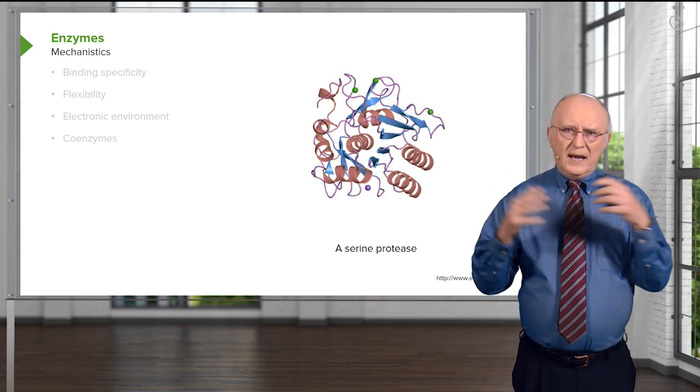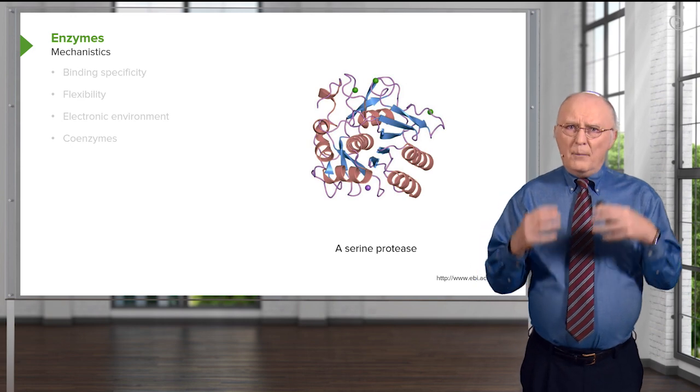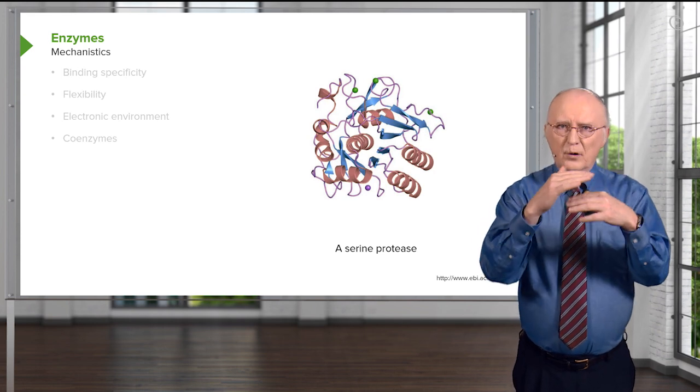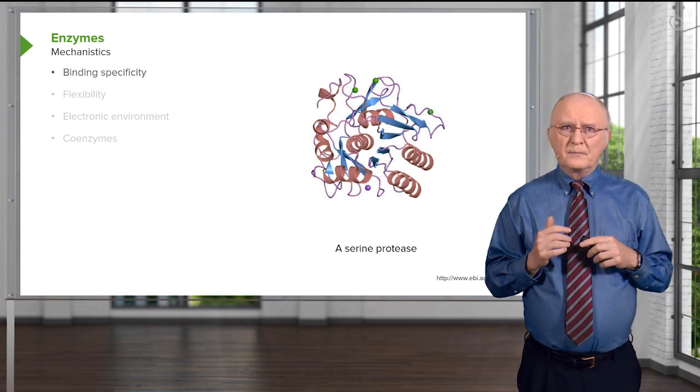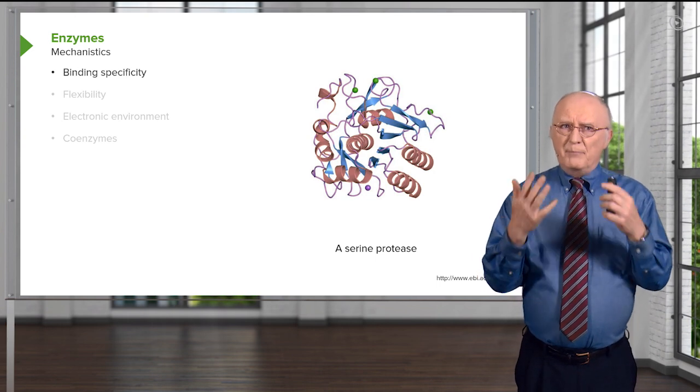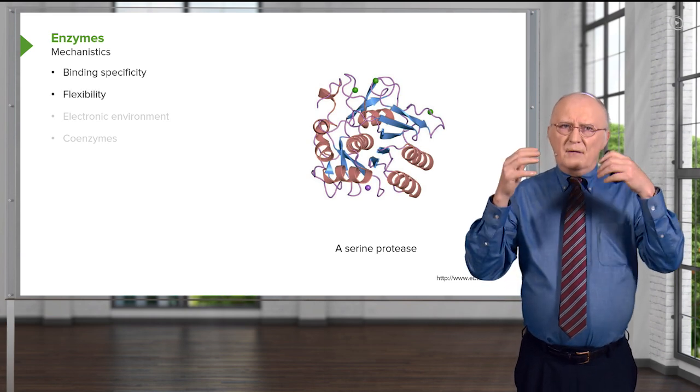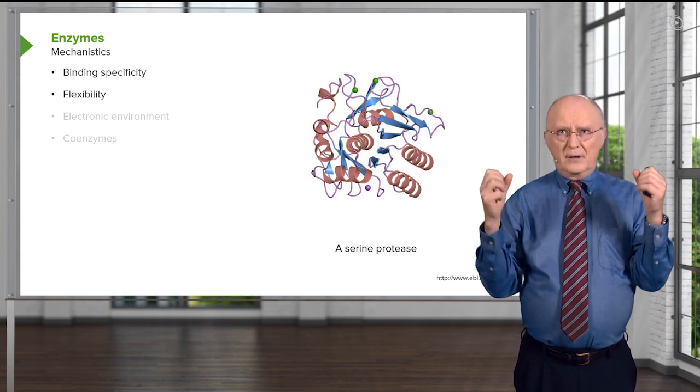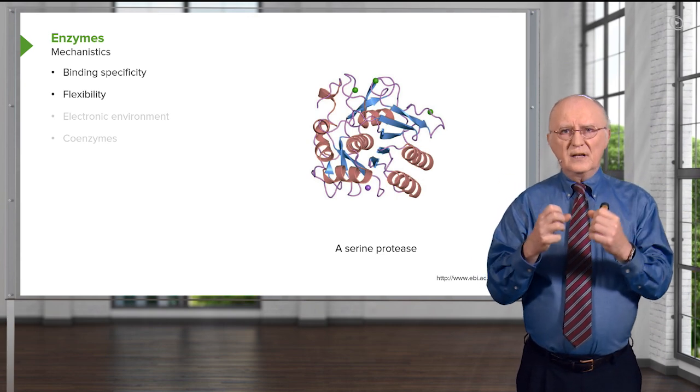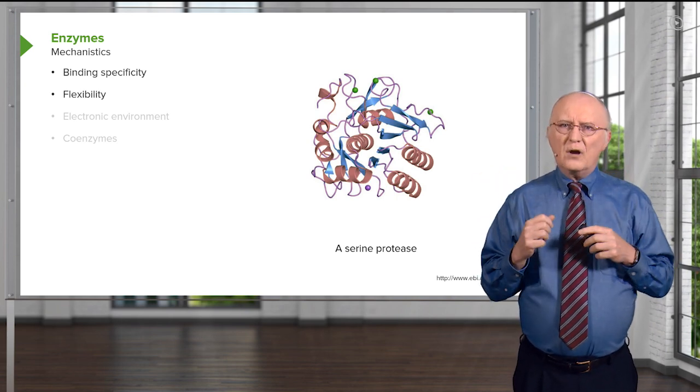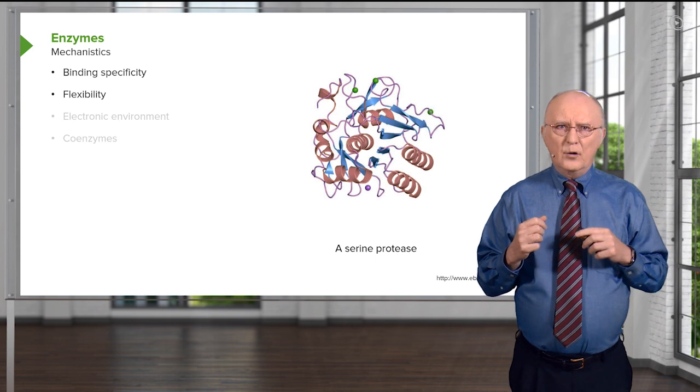And they break not every peptide bond they see, but they break specific peptide bonds at specific places within the proteins that they bind to. So that means that they have binding specificity. They don't cut everything that they see. Serine proteases have flexibility. We saw in the initial illustration the flexibility of an enzyme. And we're going to see it occurring again here as we talk about the mechanism of the serine protease.